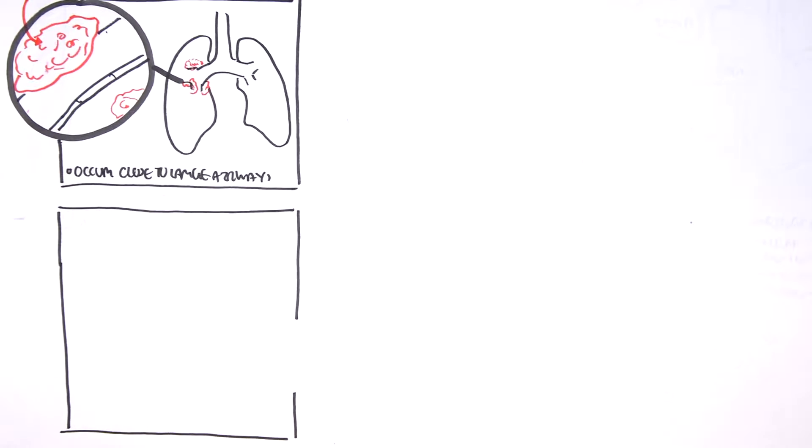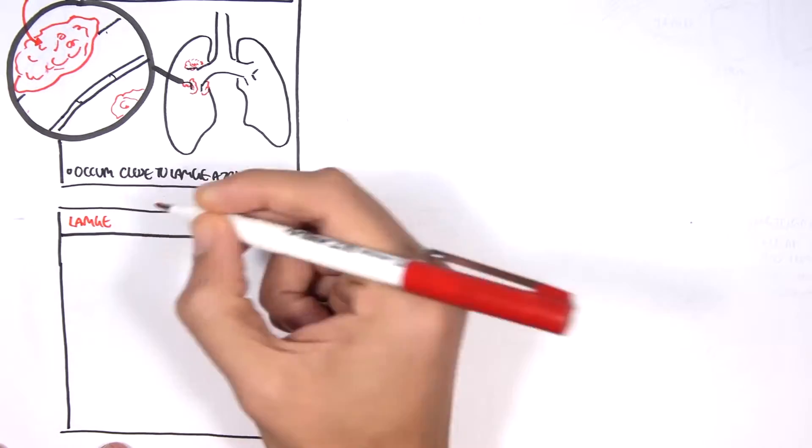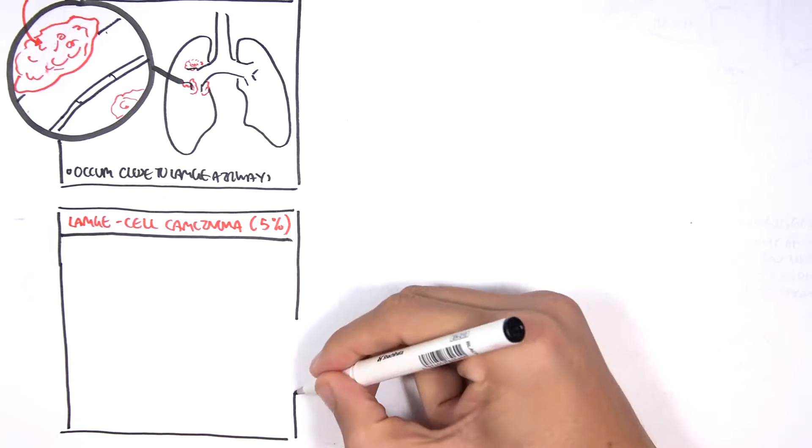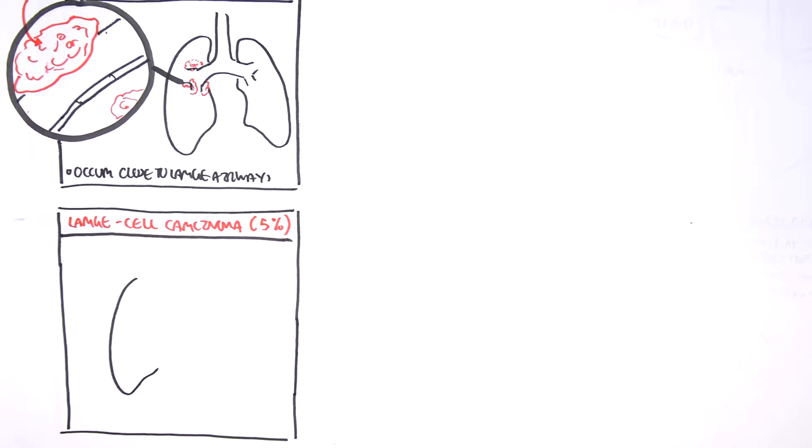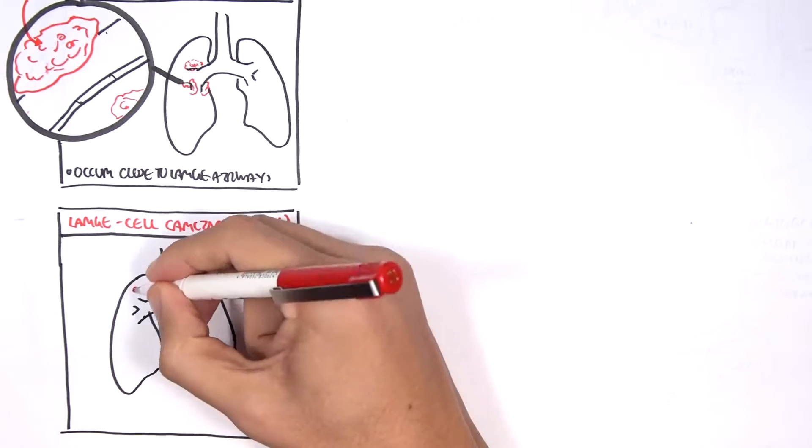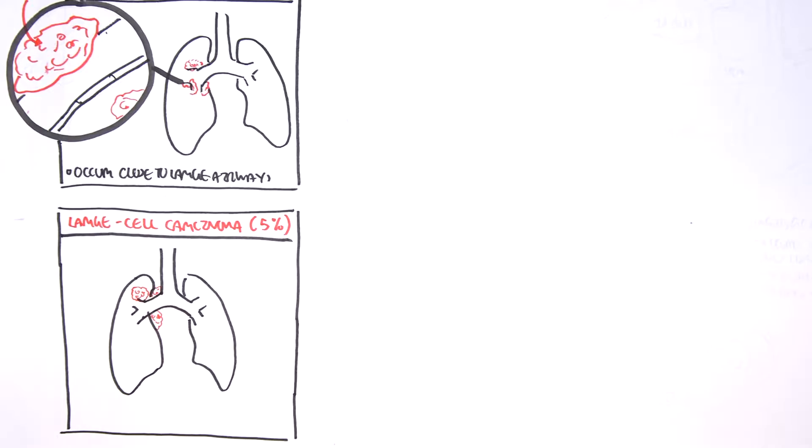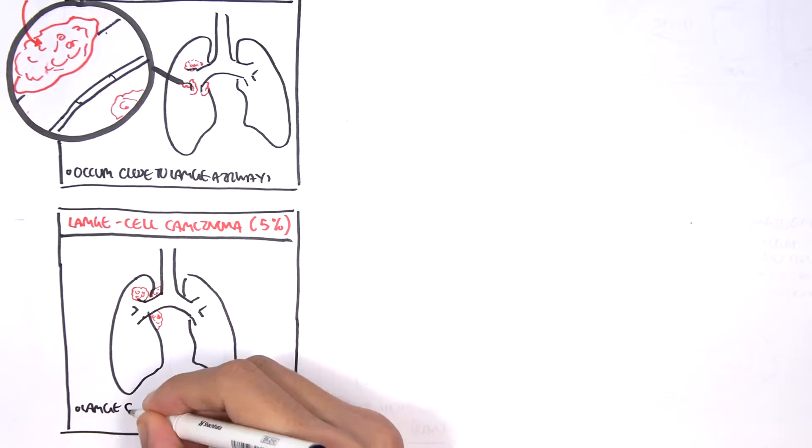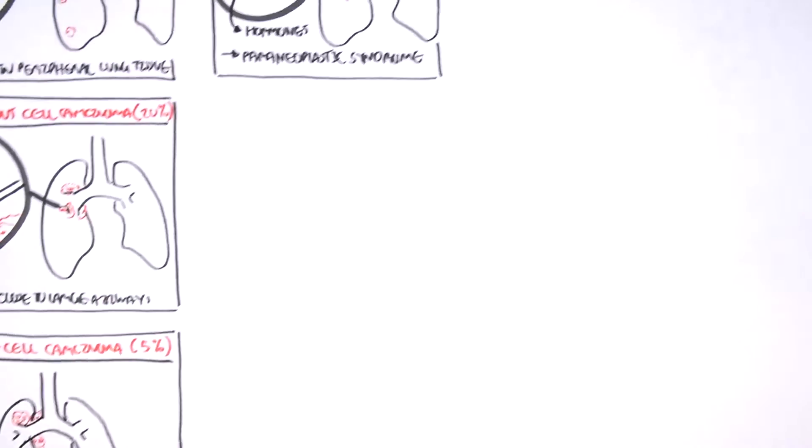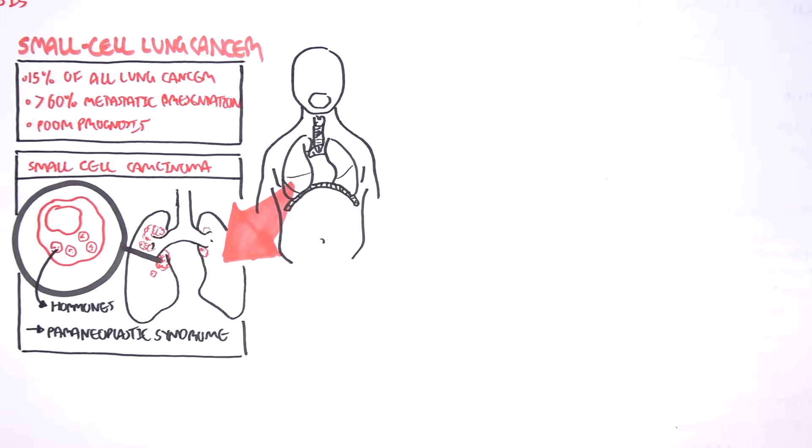The last type of non-small cell carcinoma is large cell carcinoma, which make up about 5% of lung carcinomas, so it is the least common. Large cell carcinoma rapidly grows like the small cell carcinoma and can present in the peripheral lung tissue or the proximal lung tissue. So those were the different types of lung carcinomas.